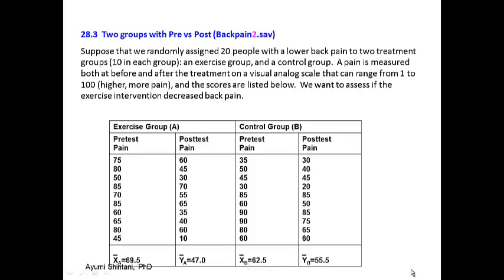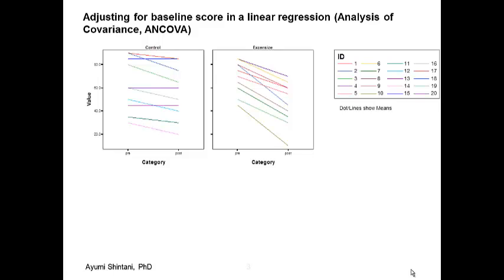We want to assess if the exercise intervention decreased back pain. This is the dataset, where each line represents data for each patient — 10 lines in the control group and 10 lines in the exercise group, totaling 20 patients.